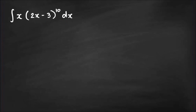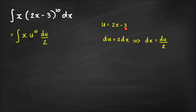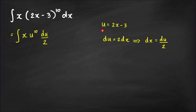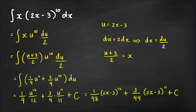Next problem: evaluate ∫x(2x − 3)^10 dx. The obvious choice for u is 2x − 3. Then du = 2dx, so dx = du/2. We can write (2x−3)^10 as u^10 and dx as du/2. The remaining problem is the factor x — we need to write x in terms of u. Going back to the substitution equation u = 2x − 3, we solve for x to get x = (u + 3)/2.